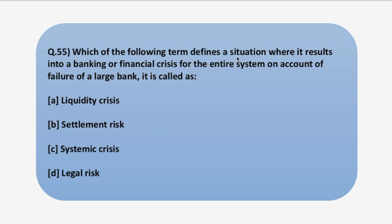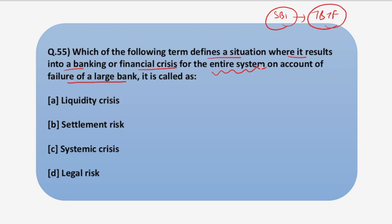The last question: which term defines a situation where a banking or financial crisis affects the entire system on account of the failure of a large bank? As discussed, if SBI fails it leads to a banking collapse because it is too big to fail. If SBI fails and the government is unable to revive it, that is known as a systemic crisis. Liquidity crisis is when no one has enough money; settlement crisis is when one party fails to deliver or pay in a securities exchange; legal crisis is when regulations are unclear. The answer is systemic crisis.